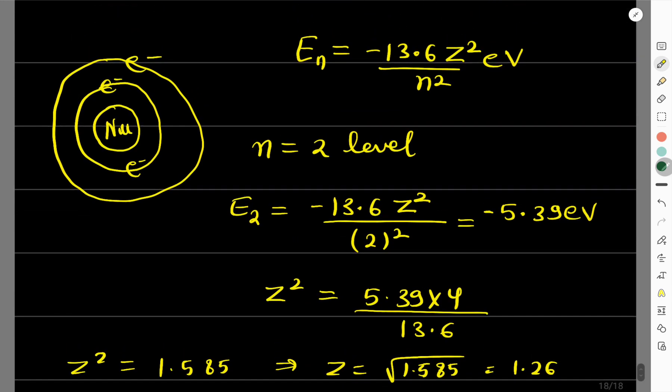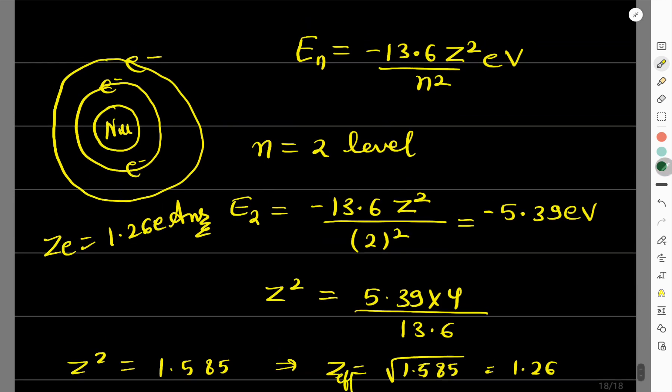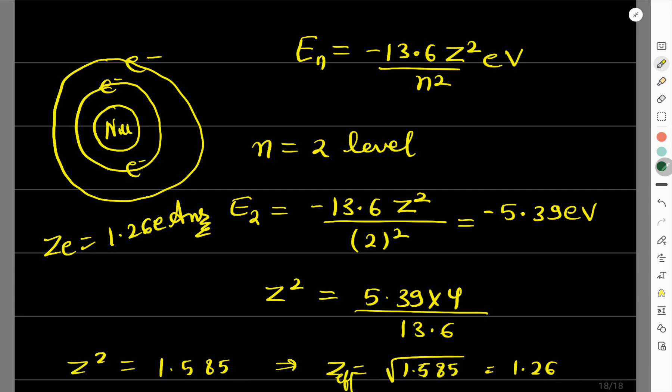So the effective charge will be Ze, that is 1.26 e. So from here, we have solved this before also many times. So in this way you have to solve. Whatever the valence electron is, you have to consider its level, and in this way you find Z effective. This is effective charge on that valence electron. So it's 1.26 e. So I hope these questions are clear to everyone.